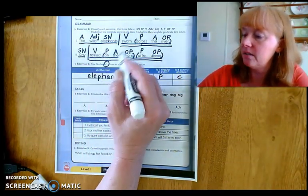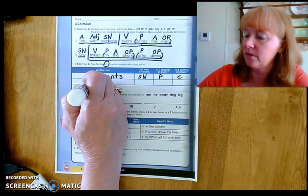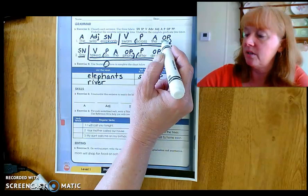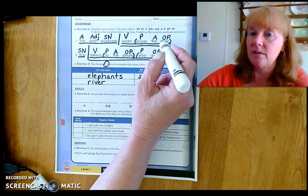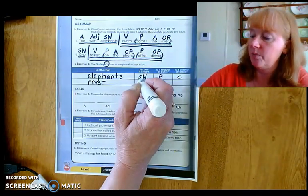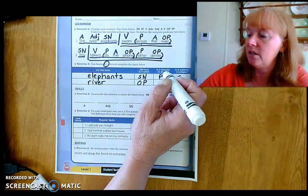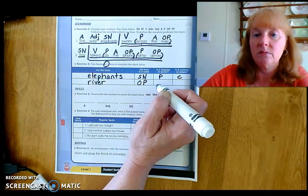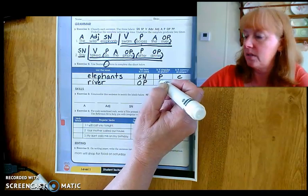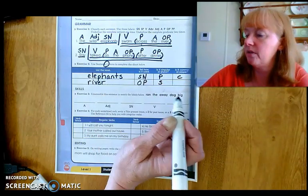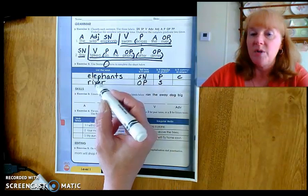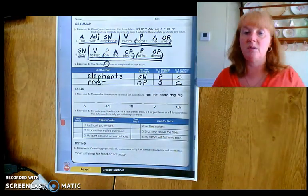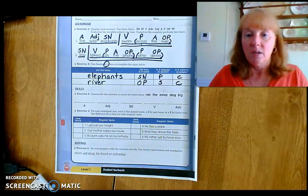The other noun in sentence number one is river. How is it used? What's it say there? O.P. Object of the preposition. Singular or plural? Singular. Good. There's only one river. And is it common or proper? It's just common. We don't know the name of it. So it just could be any river.